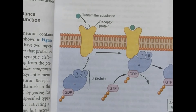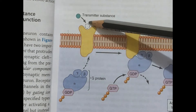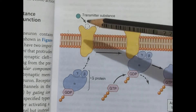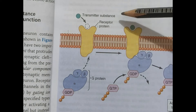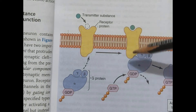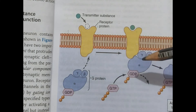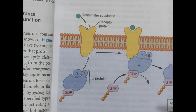The second messenger system works differently: the neurotransmitter substance again goes to the receptor protein site present externally, and when it engages there, it elicits the whole receptor protein. The activated receptor protein attracts another protein known as G protein. The G protein has components including alpha, beta, gamma, and GDP, all of which are very important.